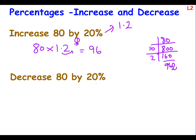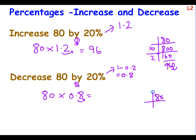To decrease 80 by 20%: I subtract 0.2 from 1, leaving 0.8. So it's 80 multiplied by 0.8. Moving the decimal point and doing the maths, then putting the decimal point back one place, gives 64. So decreasing 80 by 20% using the decimal method gives you 64.